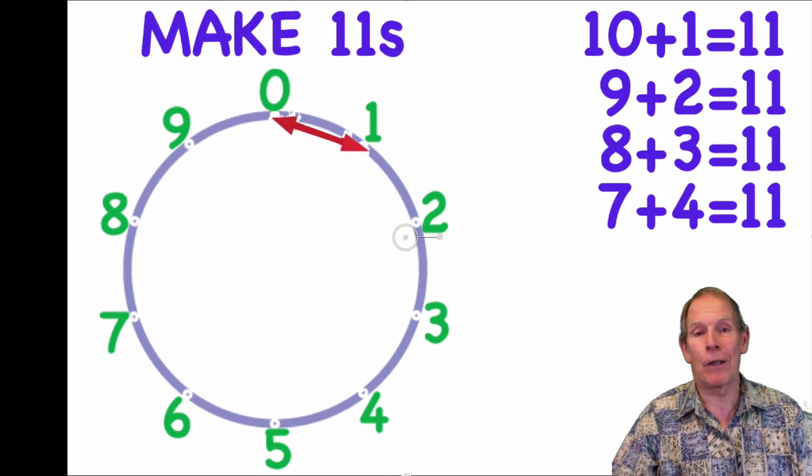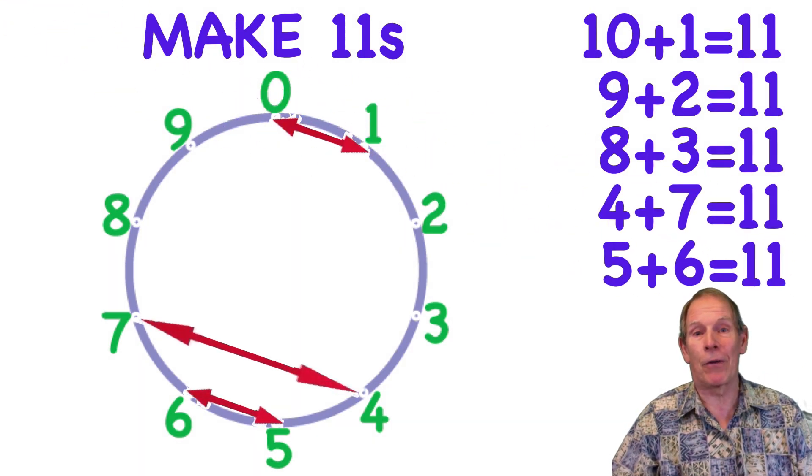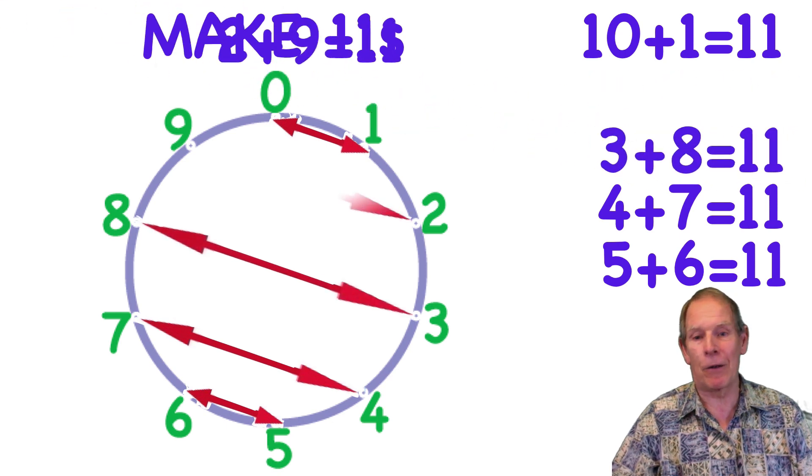Now, we can actually continue around because 5 plus 6 is 11, 4 plus 7, 3 plus 8, and 2 plus 9 all equal 11.